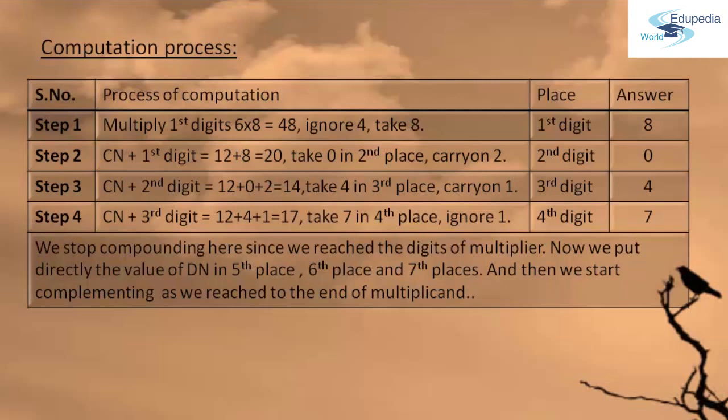Now we have to put directly the value of DN in the fifth, sixth, and seventh places. After that we start complementing as we have reached the end of multiplication. We do this process of compounding until we reach the lesser number of recurring digits, and the remaining digits are filled with DNs until we reach the higher number of recurring digits.